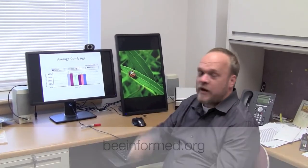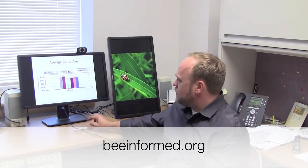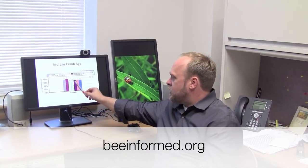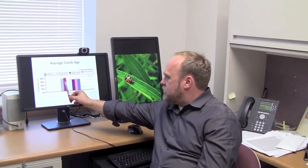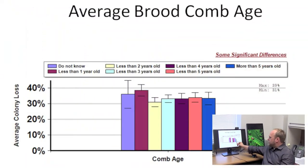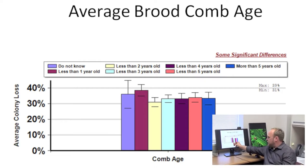So, average age of comb. We asked beekeepers how old was the comb in your colonies. And what you can see, this is the relative mortality of these different ages, basically what you can see is that there was no significant difference except for those who had very new comb, so it was less than a year, versus those who had comb that was between one and two years old.